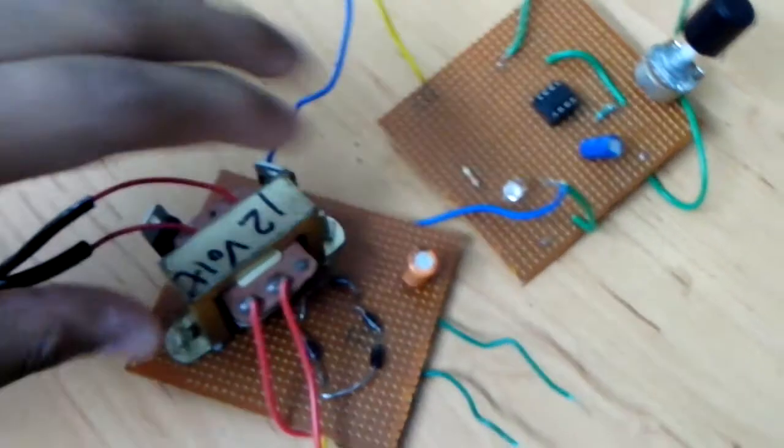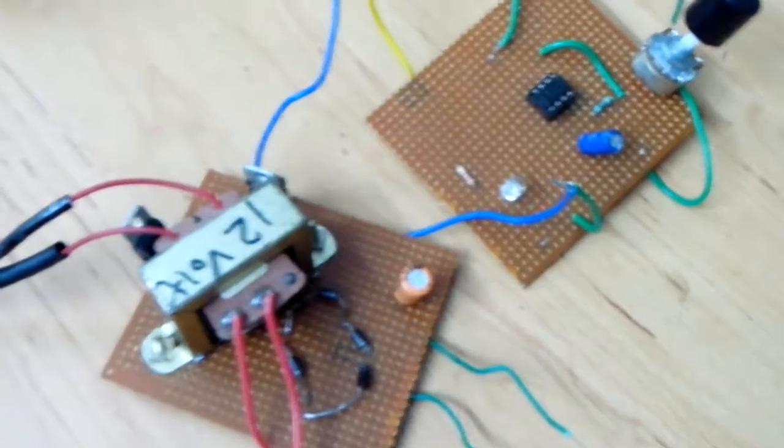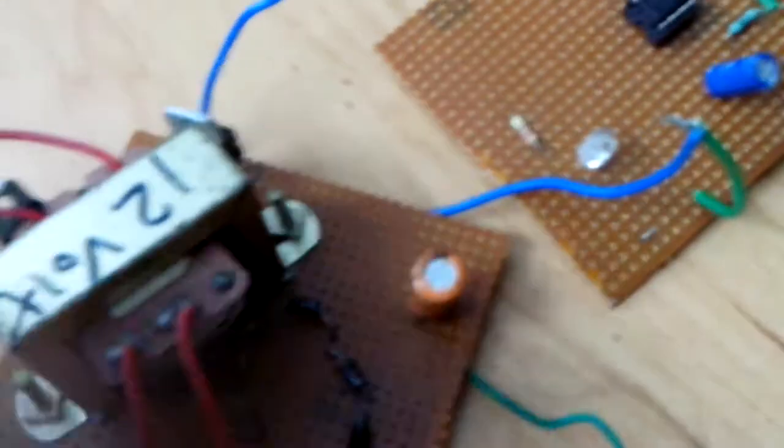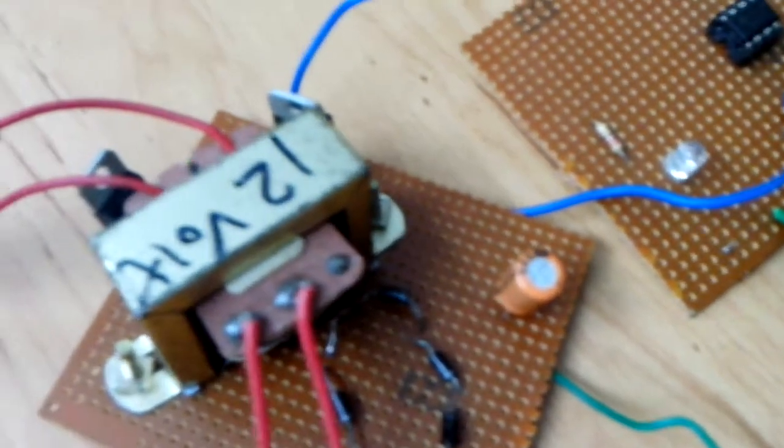This is the transformer mounted on the board. This is a bridge rectifier with four diodes, a capacitor for ripples, and a voltage regulator IC to regulate the voltage to 5 volts. This is an indicator LED.